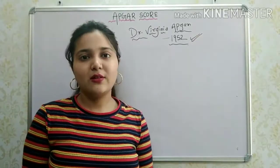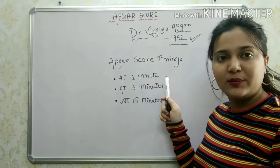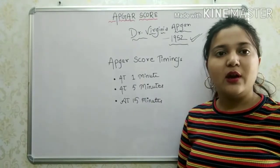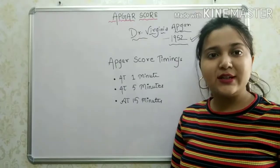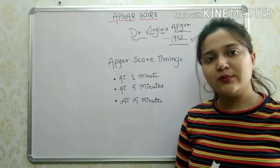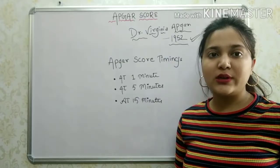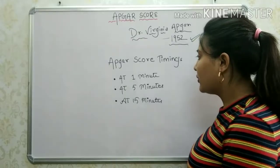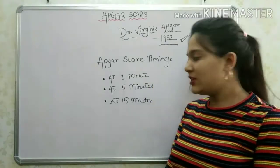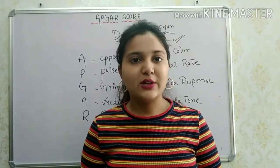We take the GAR score at 1 minute and again at 5 minutes. The scoring at 1 minute is not considered accurate because at that time the baby has just been born and it takes time to adjust to the external environment. So we get better results at 5 minutes. GAR score is taken as a physician's order.